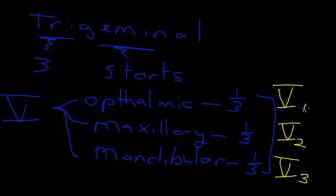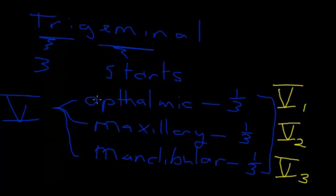V1, when we write it like this, is really Roman numeral 5 and 1, meaning the first division. Roman numeral 5, 2 means the maxillary division. The trigeminal nerve is the largest of the cranial nerves, and it is fundamentally a sensory nerve. All three components have a large sensory part to them.